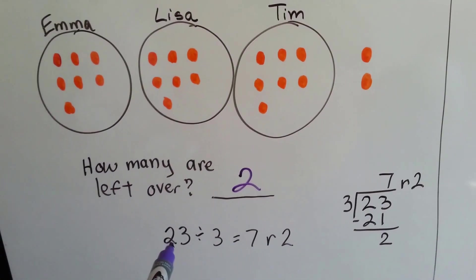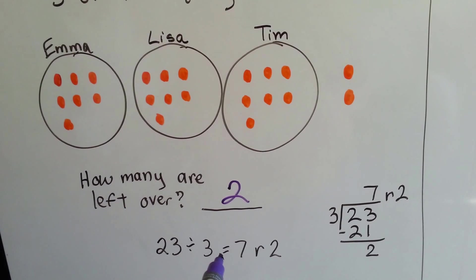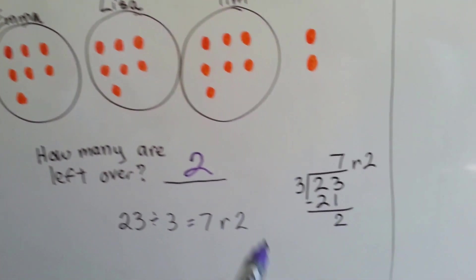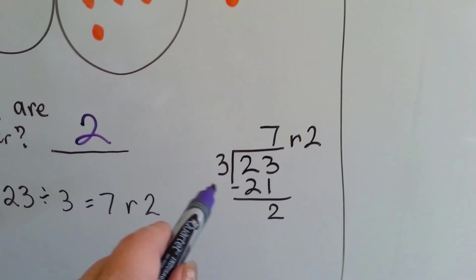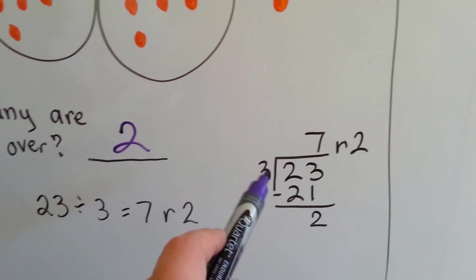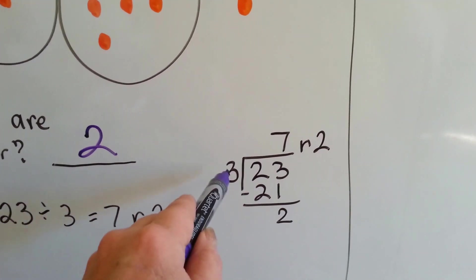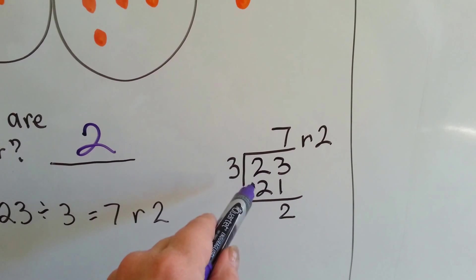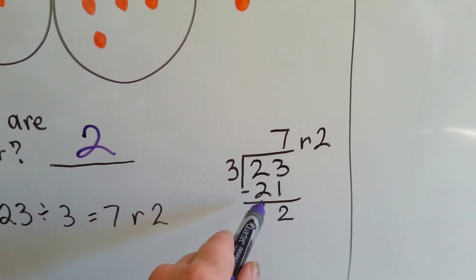So 23 divided by 3 equals 7 remainder 2. This is how you would do it in the long division method. This is a sentence equation, and this is the long division method. 3 fits into 23 how many times? Well, 3 times 7 is 21, and that's as close as we're going to get.